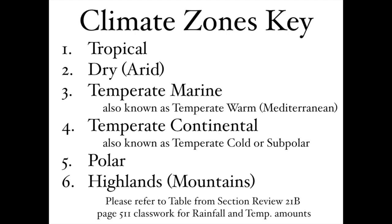The six main climates are: tropical; dry (also called arid or desert); temperate marine, meaning near water — this is a Mediterranean area; temperate continental, which is more inland and more cold, subpolar during winter times; polar; and highlands or mountains.